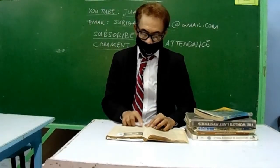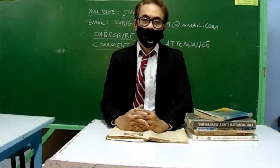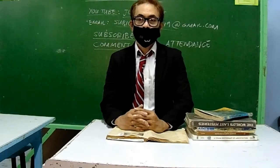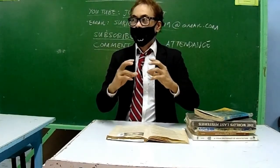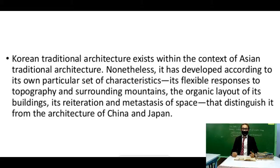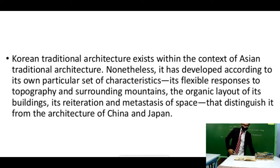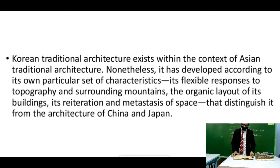Korean traditional architecture exists within the context of Asian traditional architecture. Nonetheless, it has developed according to its own particular set of characteristics — its flexible responses to topography and surrounding mountains, the organic layout of its buildings, its reiteration and metastasis of space that distinguish it from the architecture of China and Japan.